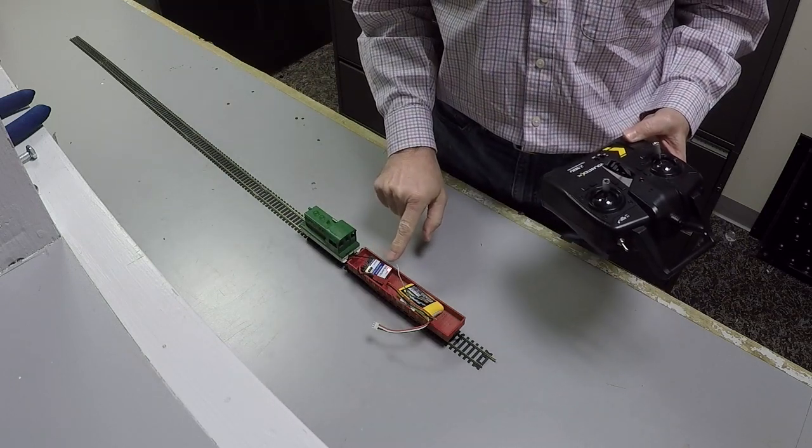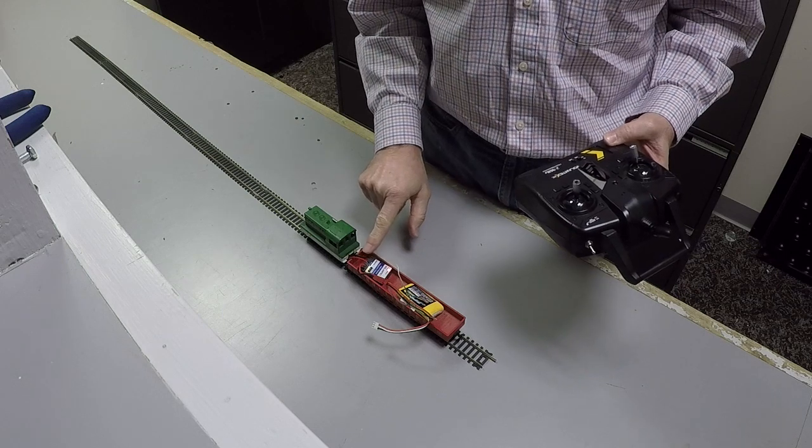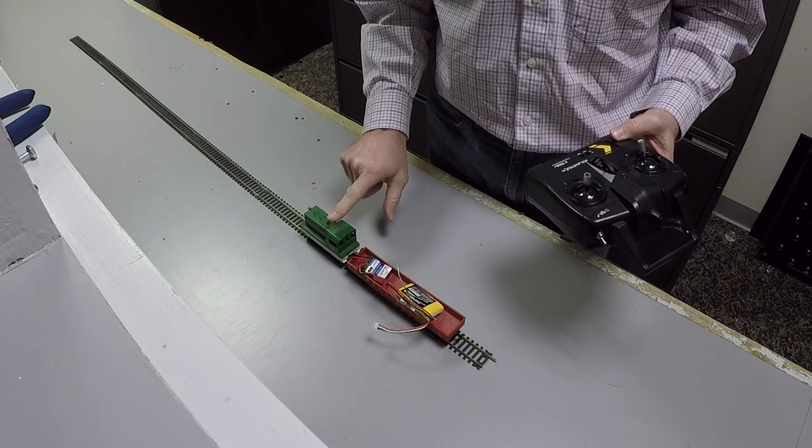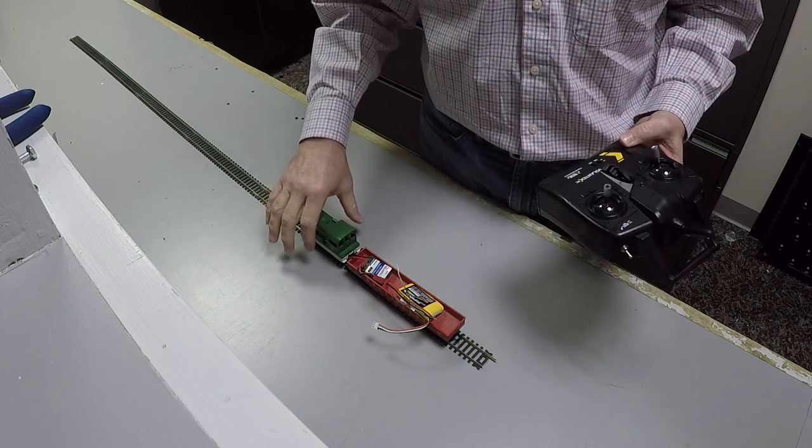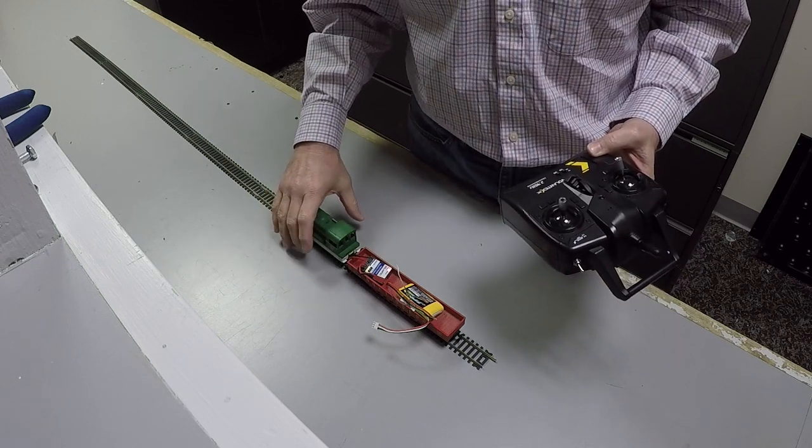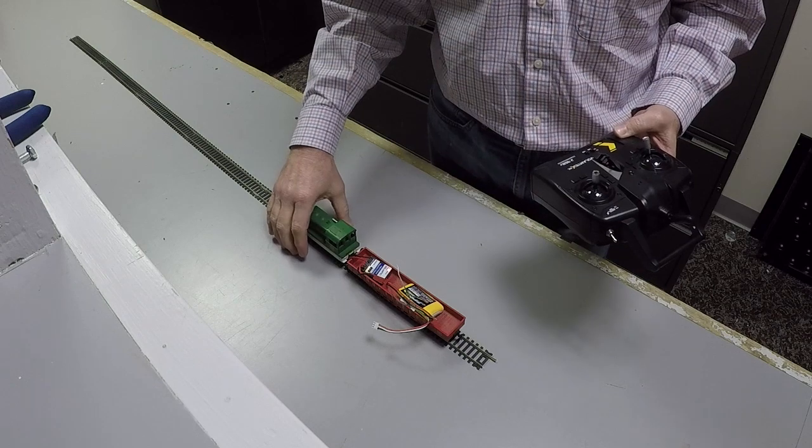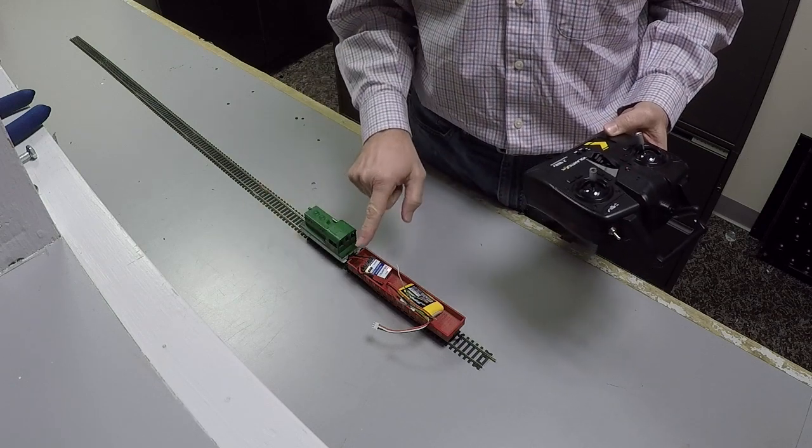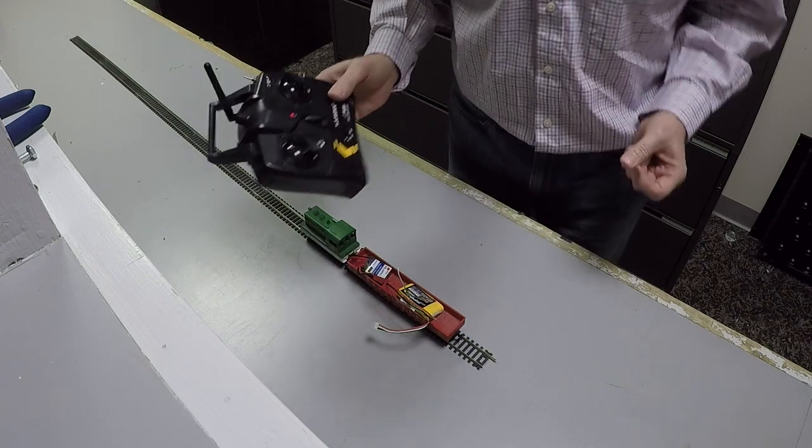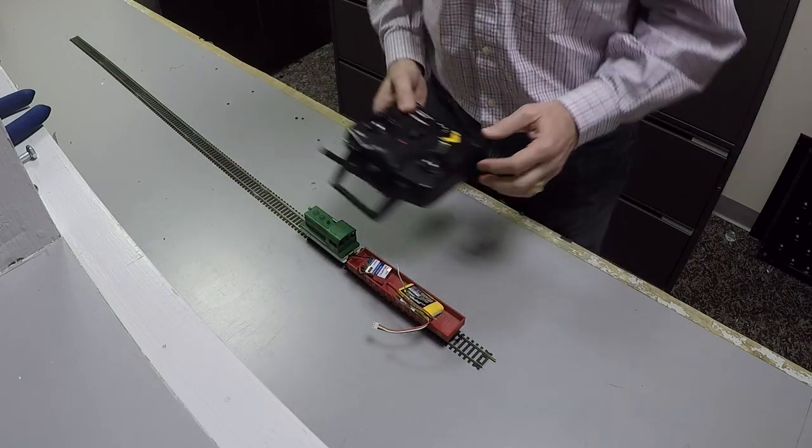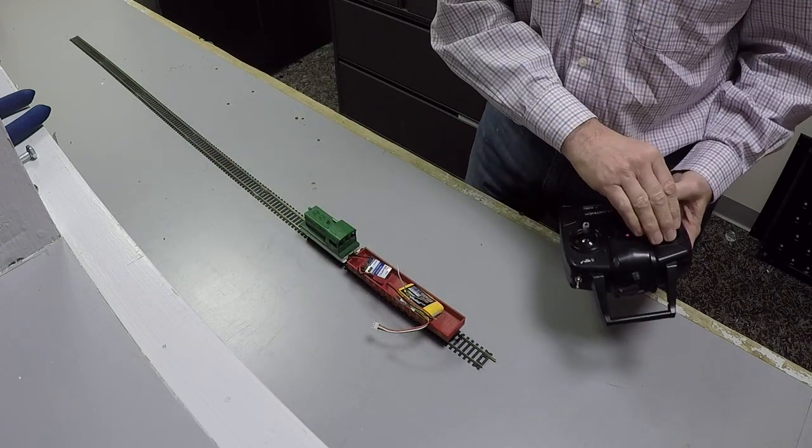I took the receiver power leads into my sacrificial locomotive here, pulled the leads off of the track pickups into my receiver and into my battery. This is the transmitter that came with the toy boat. I got it all hooked up and here we go.